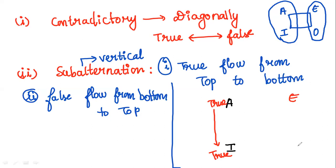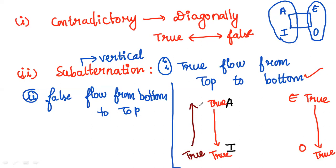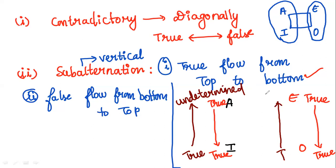In the E and O relationship, if E is said to be true, O will also be true, because truth flows from top to bottom. But the reversal is not possible — if I is true, I cannot claim A to be true. This is undetermined. Similarly, if O is true, E is undetermined. True is always on the top. Subalternation is a vertical A, I, E, O relationship.